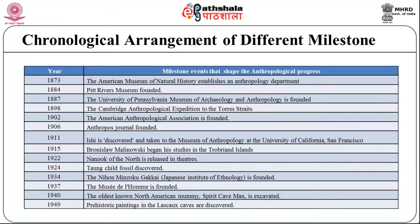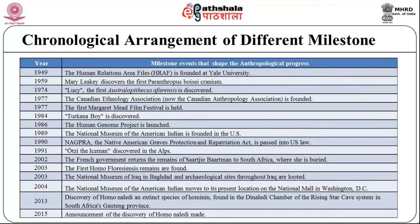In 1911, Ishi was discovered and taken to the Museum of Anthropology at the University of California, San Francisco. Ishi was the last known member of the Native American Yahi people from California. In 1915, Bronislaw Malinowski began his studies in the Trobriand Islands. In 1922, Nanook of the North was released in theatres. In 1924, the Taung child fossil was discovered. In 1934, the Nihon Minzokugakkai — the Japanese Institute of Ethnology — was founded. In 1937, the Musée de l'Homme was founded. In 1940, the oldest known North American mummy, Spirit Cave Man, was excavated. In 1949, two events took place: the discovery of prehistoric paintings in the Lascaux Caves, and the foundation of the Human Relations Area Files (HRAF) at Yale University.